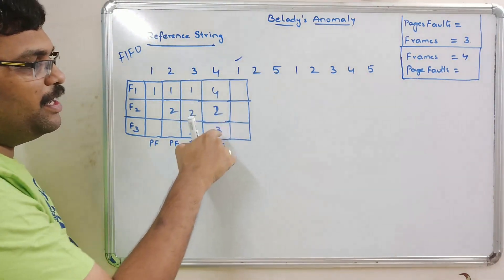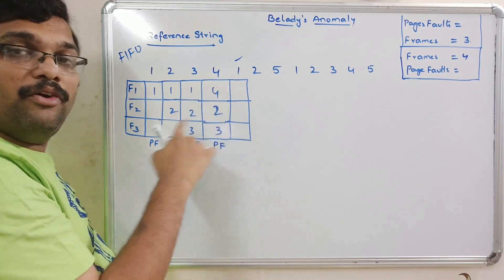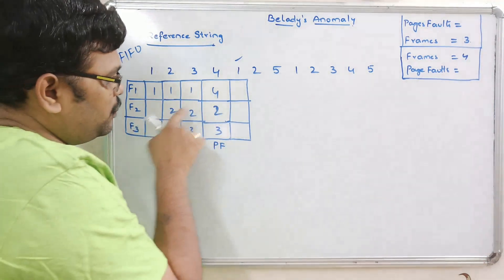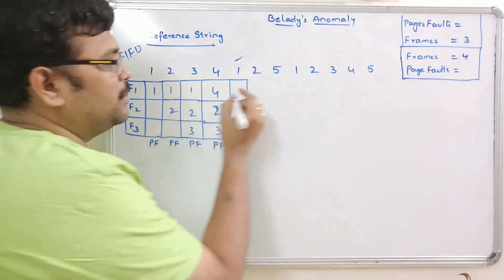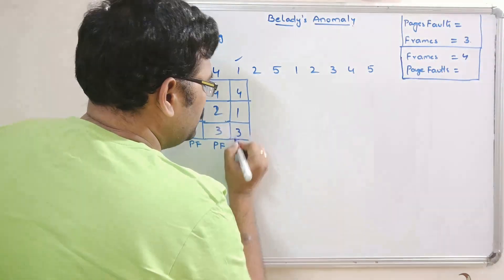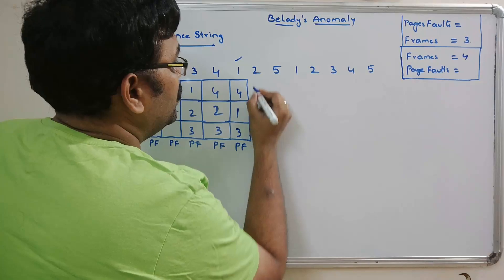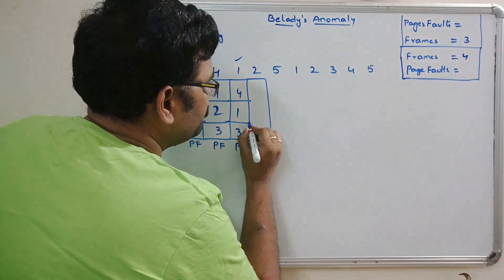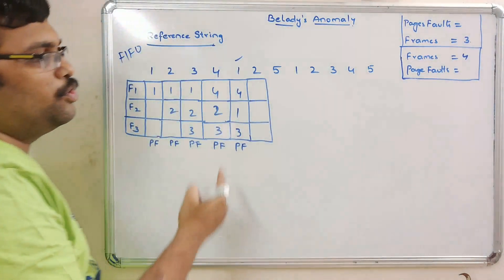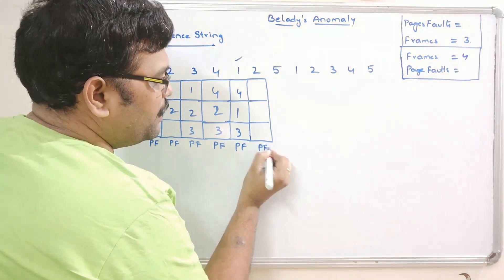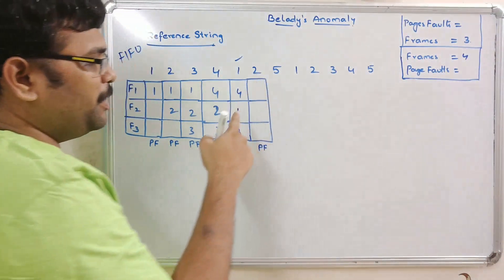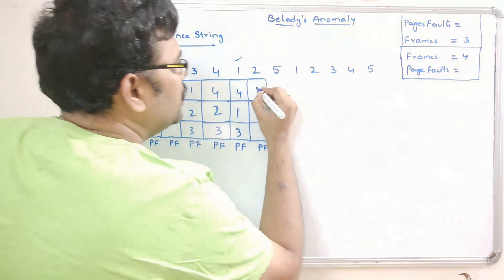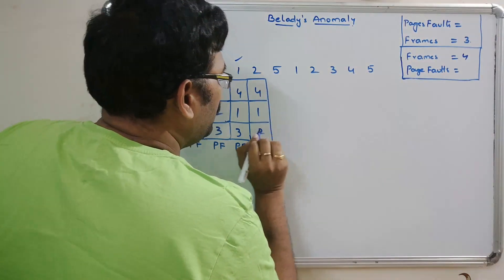Next, page 1 is not available, so we apply FIFO for replacement. Among the three frames, page 2 is the oldest, so frames now hold 4, 1, 3 — this is a page fault. Page 2 is also not available — another page fault. Among the current frames, page 3 is the oldest, so it is replaced: frames become 4, 1, 2.